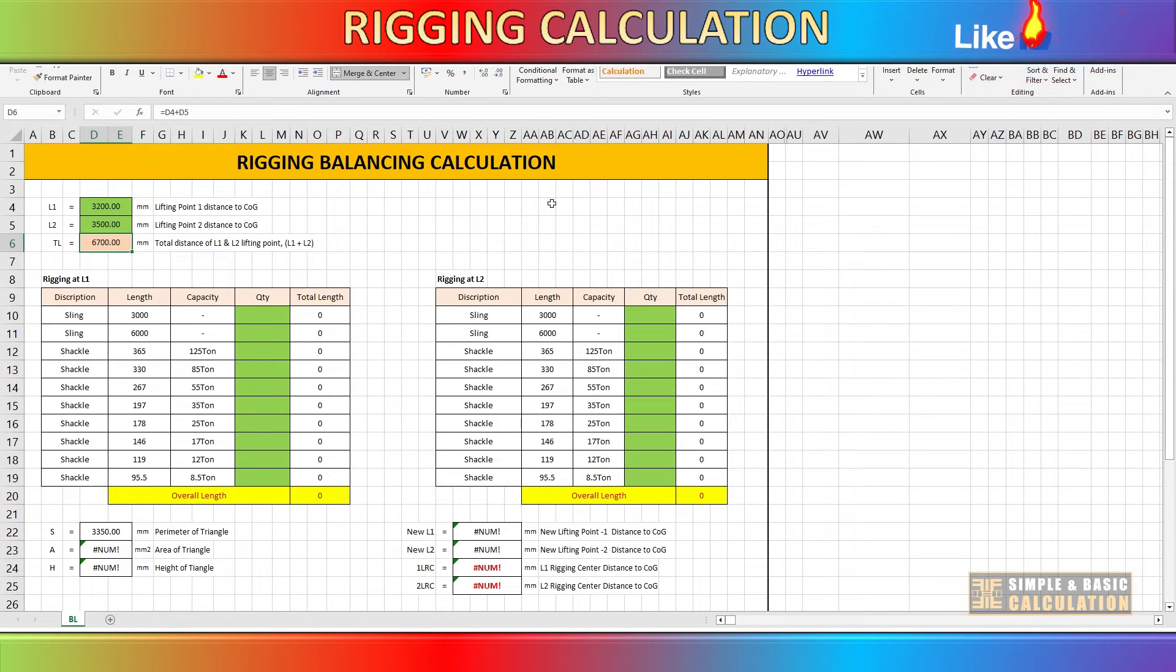The designated column, indicated by the green highlight, allows you to enter both the data and quantity of the rigging you intend to utilize. Additionally, you have the option to personalize the length of the rigging.